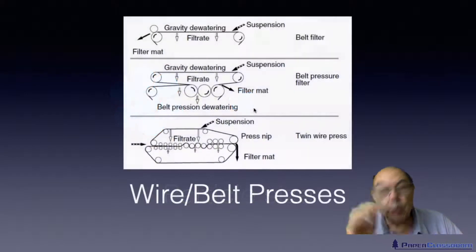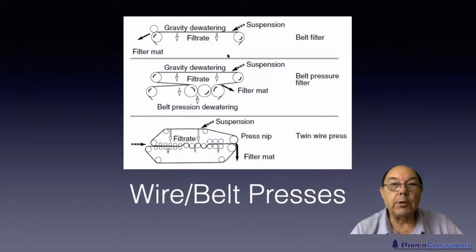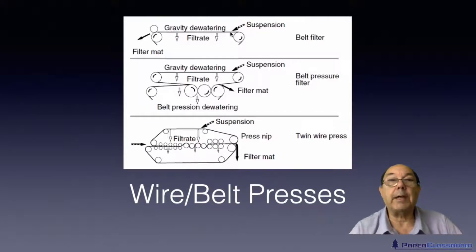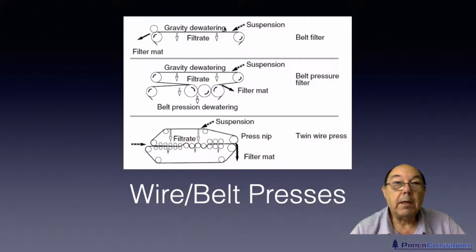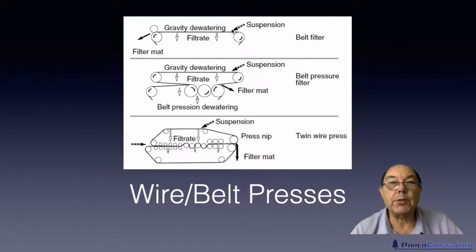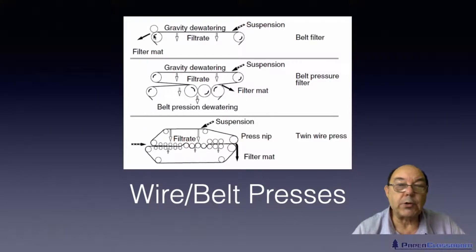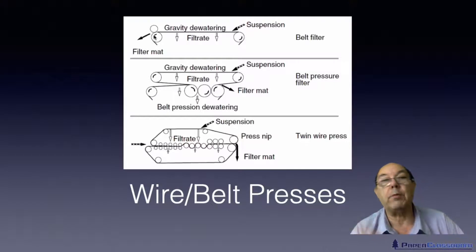This was the original so-called gravity dewatering, basically just like a standard fourdrinier. You have a wire, you squirt the suspension onto the wire, and as it goes through, water falls through the wire. Here you have a little press and a suction roll — what we would call a couch on a paper machine — to squeeze some water out.